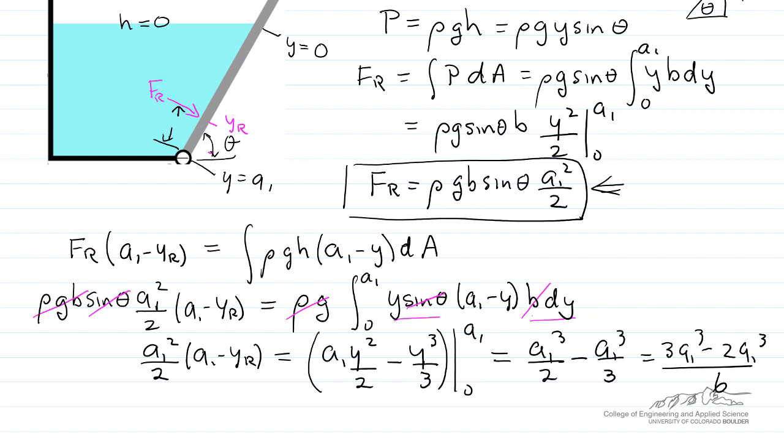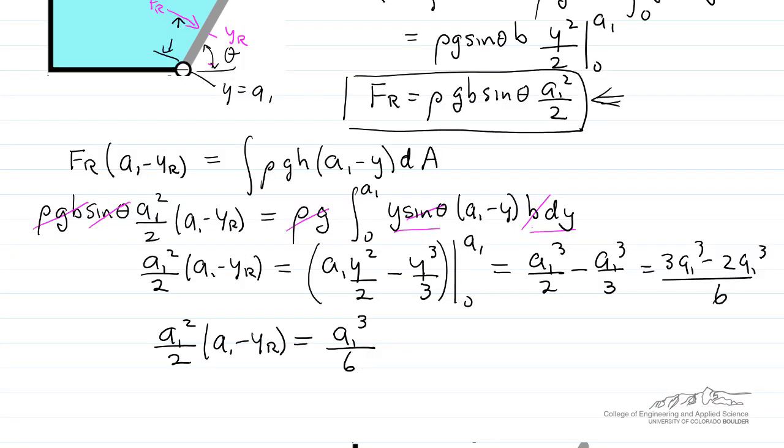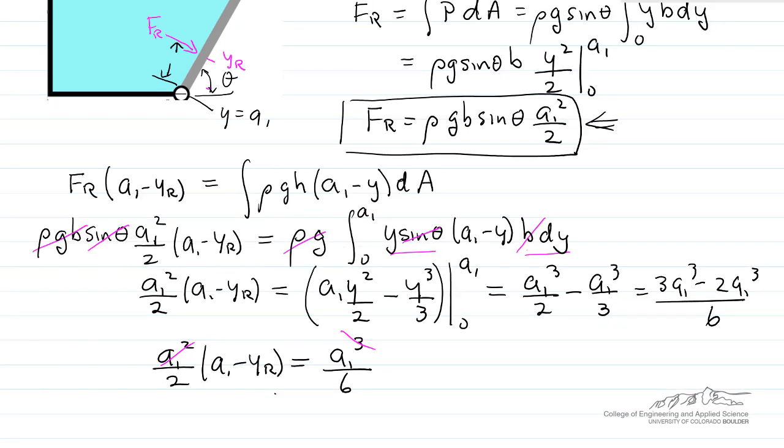Simplifying, I can cancel two of the a1 values. Rearranging and solving for the distance a1 minus yr gives a1/3.